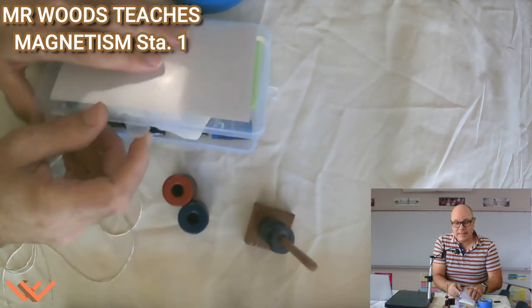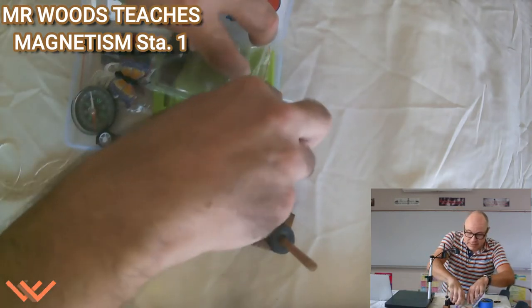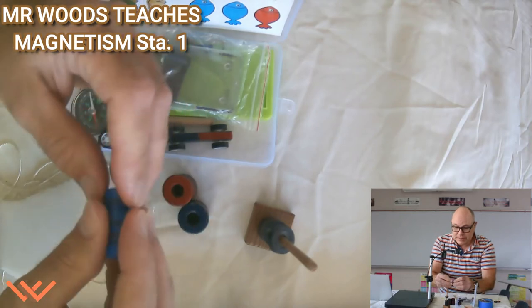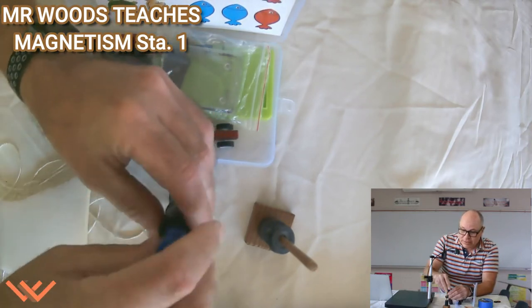Let's go into the little kit that I have. We have some ring magnets here as well. We have red and blue here. Let's take a look at that. See how the red wants to go to the blue.